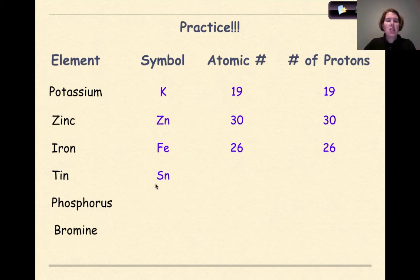Tin, the symbol for tin is Sn, the atomic number is 50, therefore the number of protons is 50. Phosphorus, the symbol is P, the atomic number is 15, therefore the number of protons must be 15. And finally, bromine. The symbol for bromine is Br, the atomic number is 35, therefore the number of protons must be, you guessed it, 35.